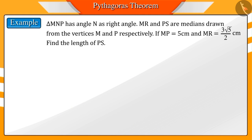Angle N is a right angle in the right-angled triangle MNP in which MR and PS are medians drawn from the vertices M and P respectively. If MP is equal to 5 cm and MR is equal to 3 root 5 by 2 cm, then find the length of PS.